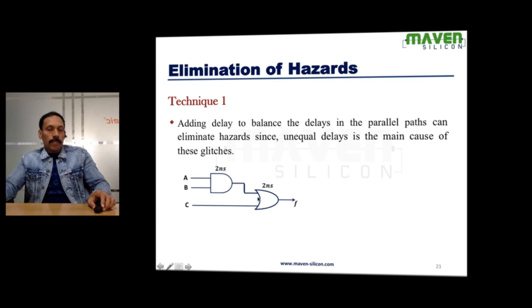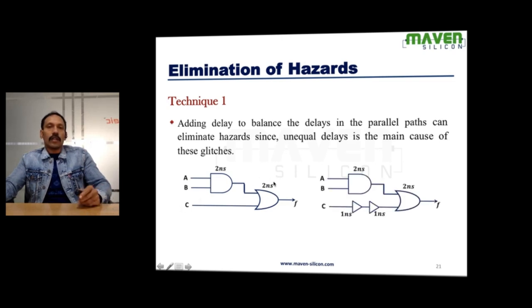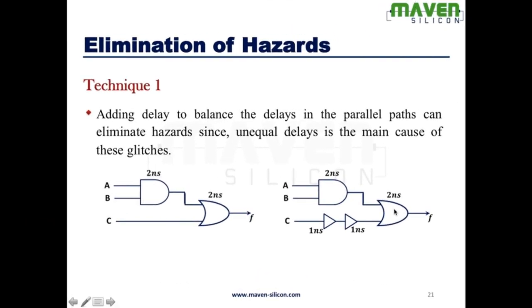If you calculate the propagation delay, A to F is 4 nanosecond, B to F is 4 nanosecond, but C to F is only 2 nanosecond. So, what we do is we add buffers. This way we try to equalize the delays. Now, if we calculate the propagation delay of C to F, 1 plus 1 plus 2, 4 nanosecond. So, this way you can avoid the switching transitions.